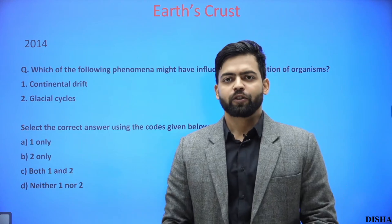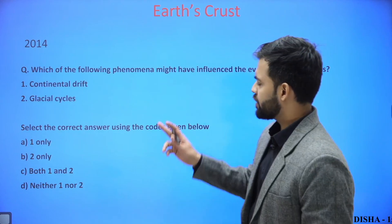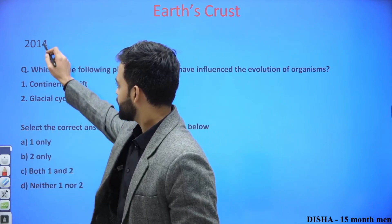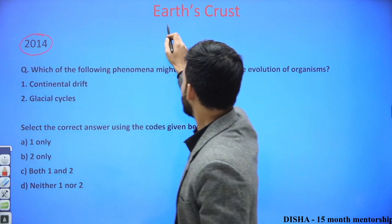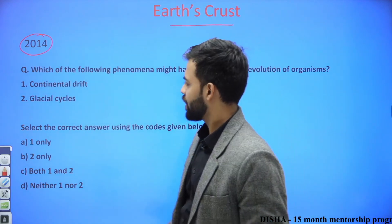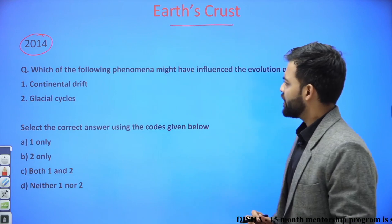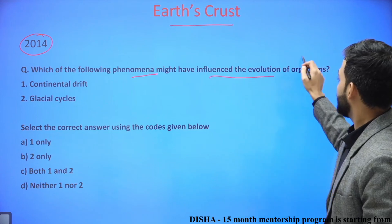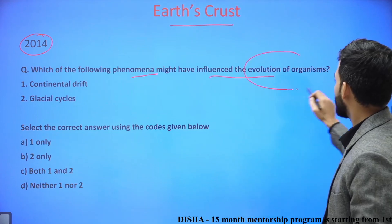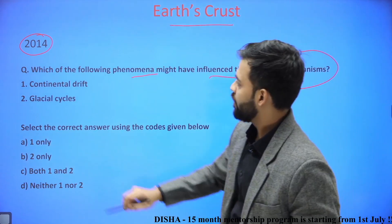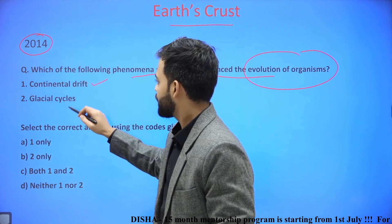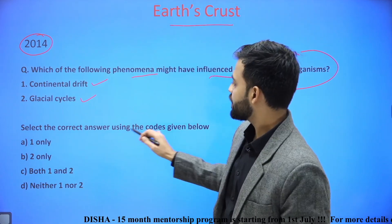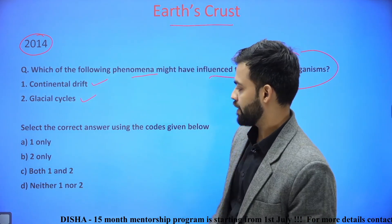Hello and welcome. We will look into this question that came in the year 2014 and is related to the topic Earth's crust. The question is: which of the following phenomena might have influenced the evolution of organisms? 1st, continental drift; 2nd, glacial cycles. Select the correct answer using the codes given below.